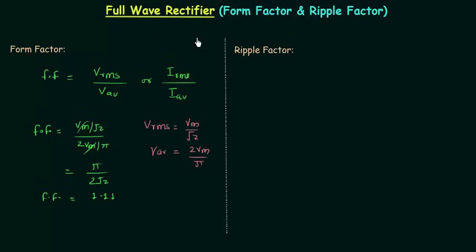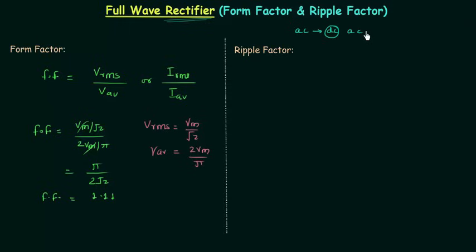Now we will calculate the ripple factor. Ripple factor is a very important parameter for a rectifier circuit. It represents the percentage of AC component in the rectified output. We are converting AC to DC using rectifiers, and in the DC output we don't want any AC component. Ideally, the AC component must be equal to zero, which implies the ripple factor gamma is also equal to zero.